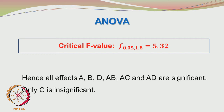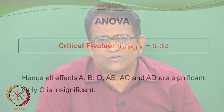Among the different effects considered — A, B, C, D, AB, AC, and AD — only C was considered to be insignificant and all other effects are significant. We are not looking at ternary interactions like ABC here because that ternary interaction ABC is aliased with factor D, ternary interaction BCD is aliased with factor A, and B is aliased with ACD. So ternary interactions are aliased with the main factors and we are not able to obtain them separately.